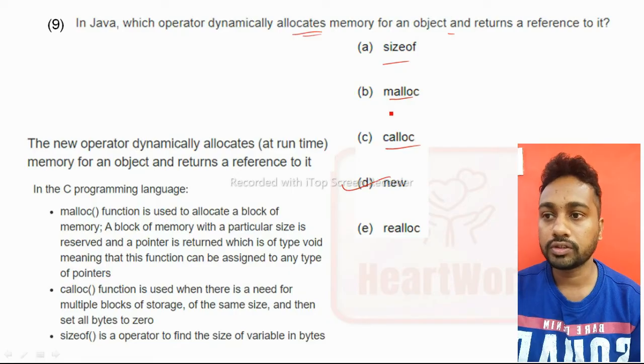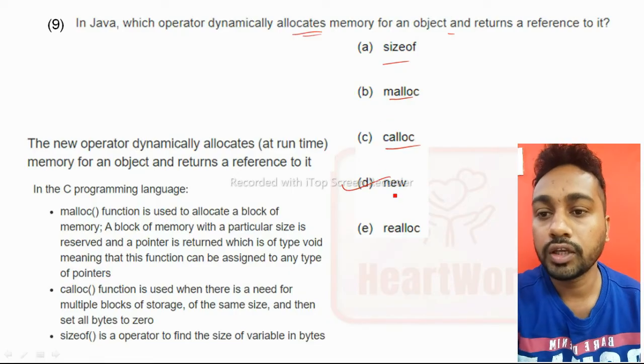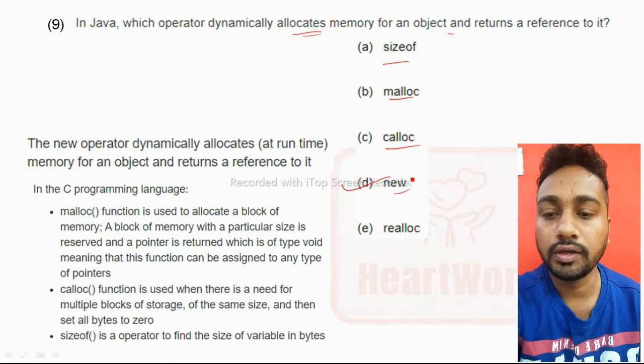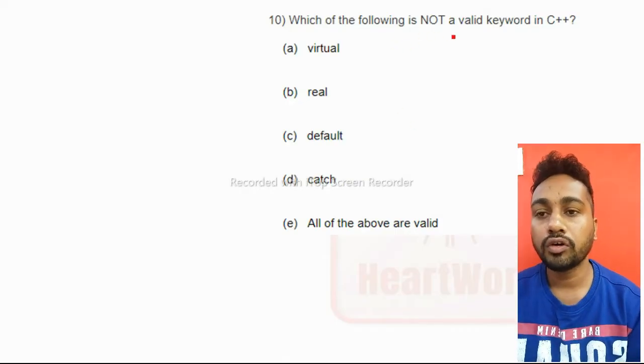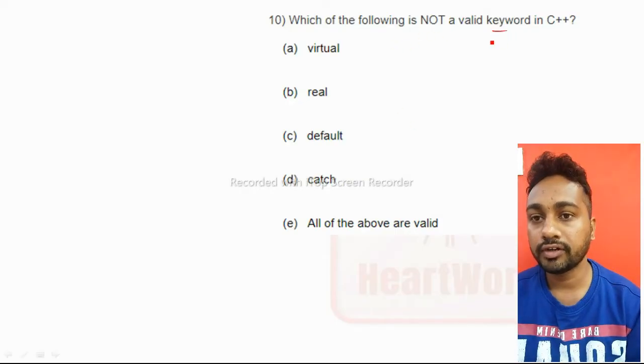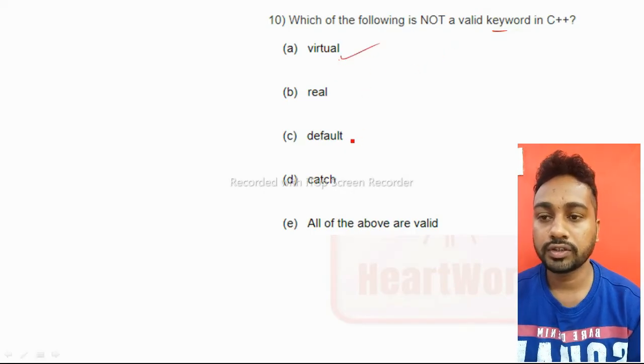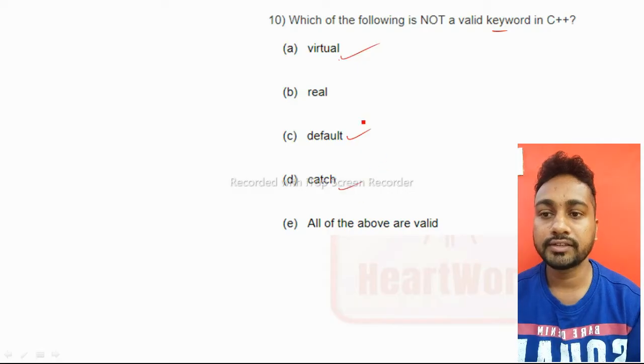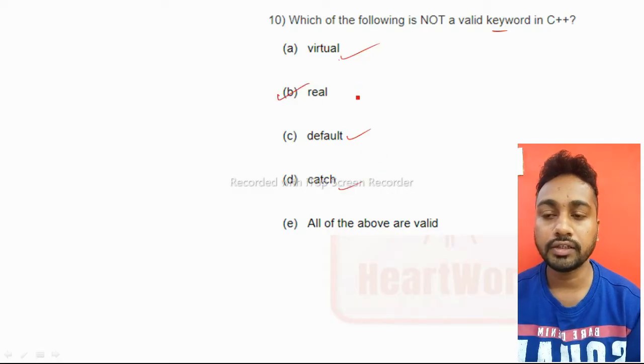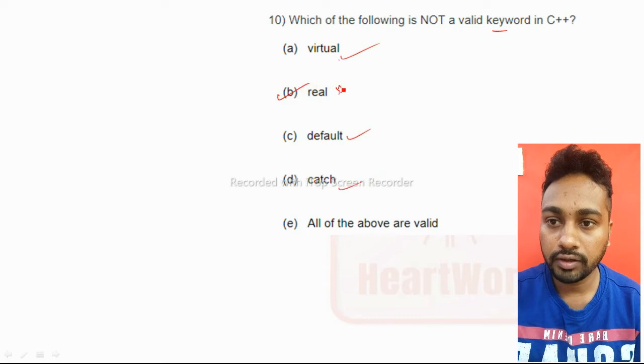Which of the following is not a valid keyword in C++? In C++, virtual is a keyword, default is a keyword, catch is a keyword, but real is not a keyword. Option B is the answer.